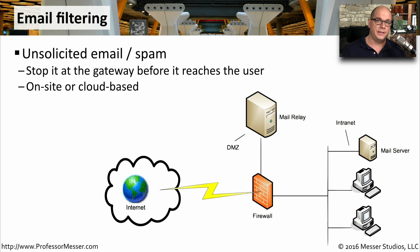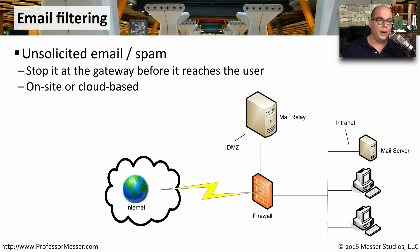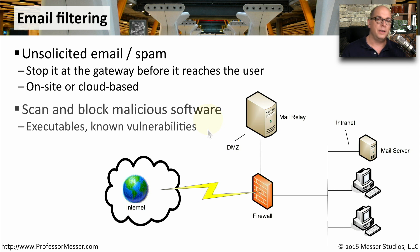We rely on email to perform our day-to-day tasks, but from a security perspective we're concerned about what may be going through our email systems. One of these concerns revolves around unsolicited email, or spam. There are many ways to filter out spam — one way is to stop it at the mail gateway before it even gets into the organization. You can filter spam on the inside of your network, or use cloud-based services as well. Email can also be used to send malicious software, so we always need some type of filter that can evaluate everything sent through the email system and allow or disallow it based on what's inside.